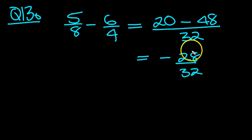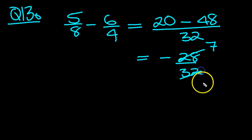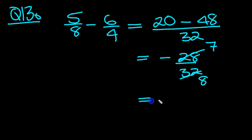If you look at this fraction now, we see there's a 4 common. 4 goes into 28 7 times, and 4 goes into 32 8 times. So we end up with minus 7 over 8.